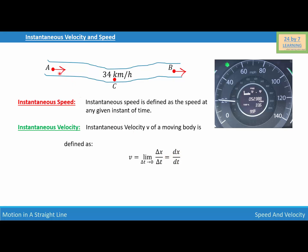So basically, if I tell you the direction as well as the magnitude of the velocity, which is 34 kilometers per hour from A to B, then that is known as instantaneous velocity.